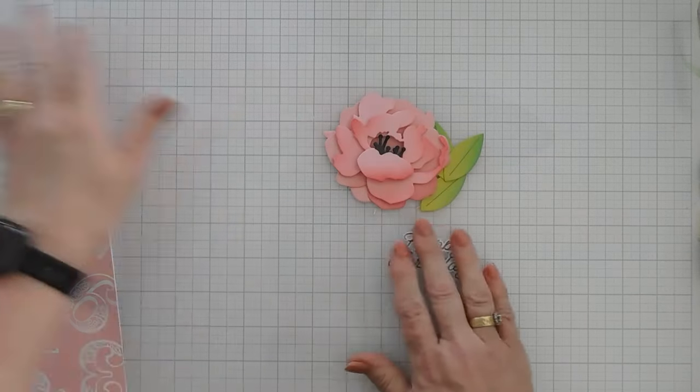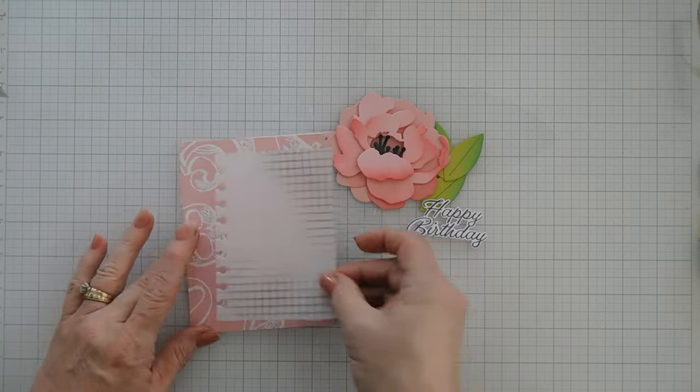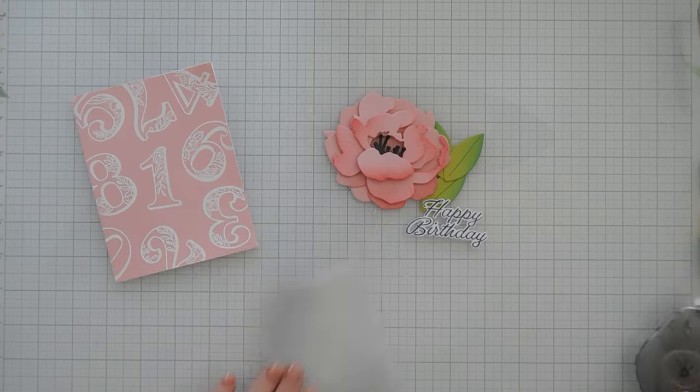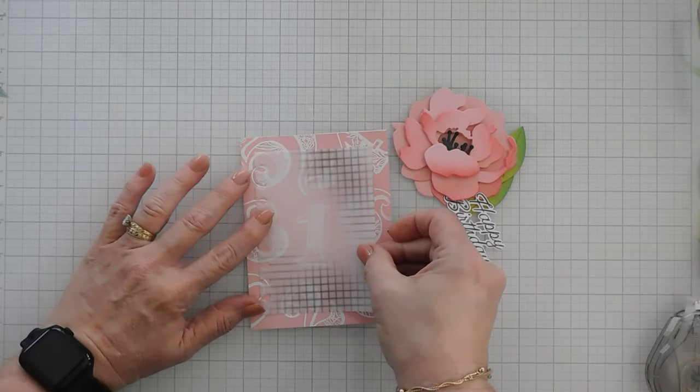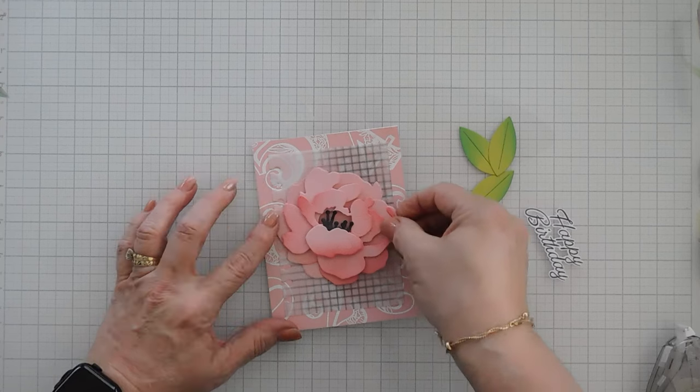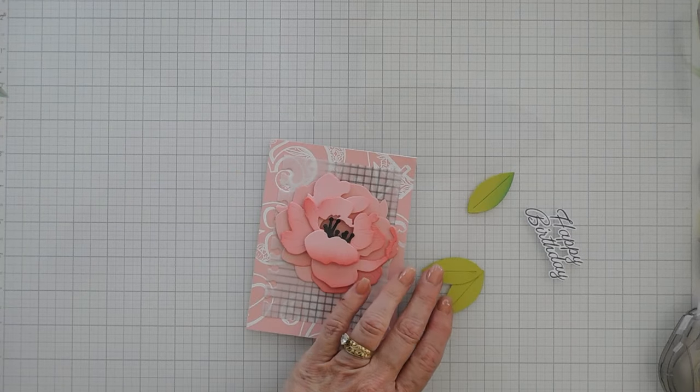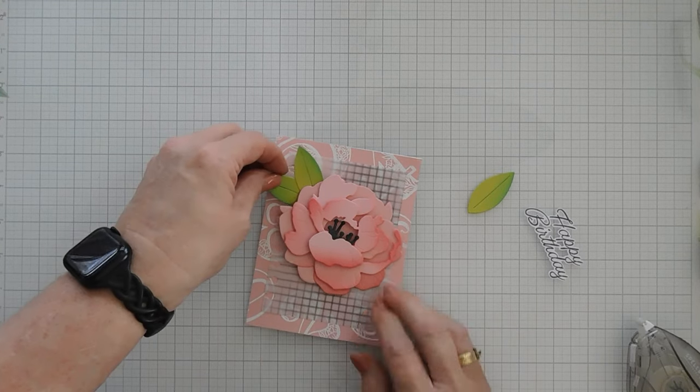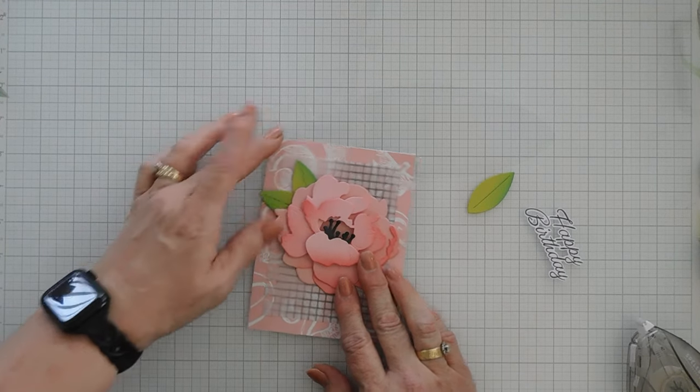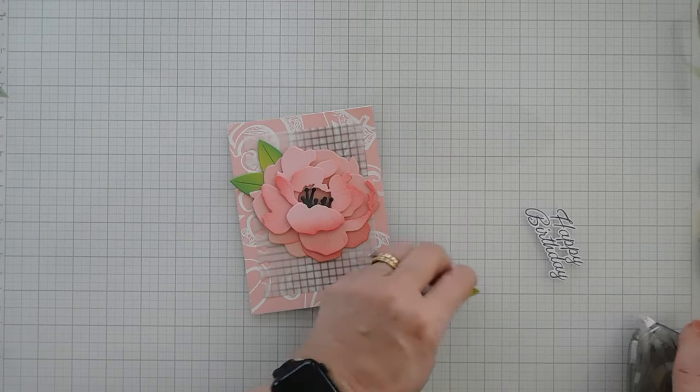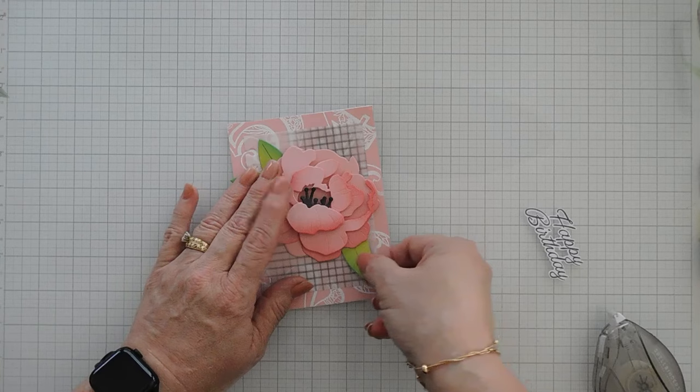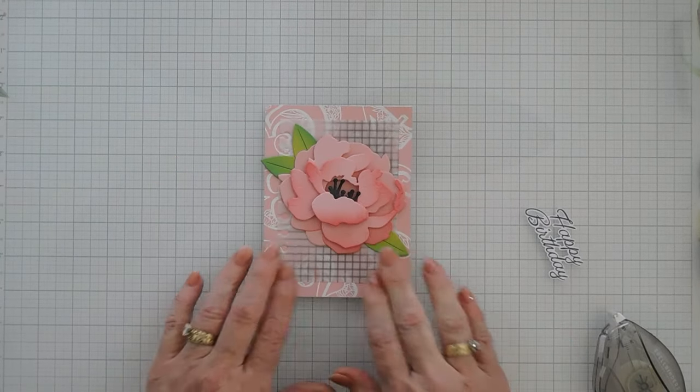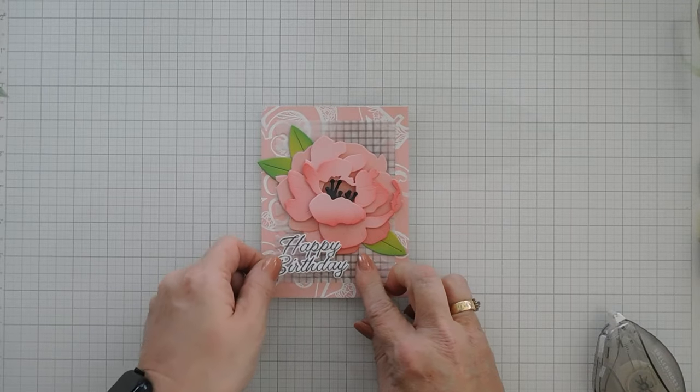Now let's take all of our elements, and we're going to put it together. I'm going to start by taking my grid paper. I'm going to add some adhesive behind it, right in the middle. We're going to layer it right in the center, and we're going to add this. We're going to add our leaves. And at the very bottom, we're going to add happy birthday.